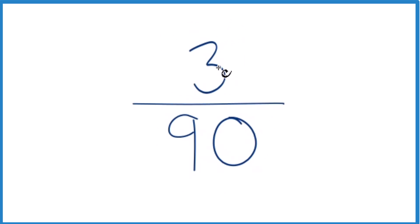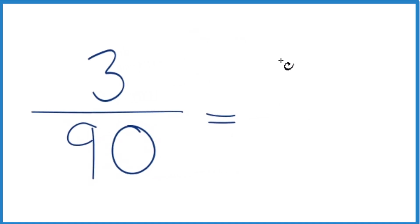It looks like 3 would go into itself and 90 evenly. So let's try that. 3 divided by 3 is 1, and then 90 divided by 3, that's 30.